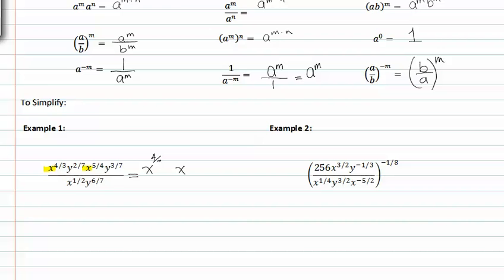The exponents are four-thirds and five-fourths. Before we can add the fractional exponents together, we must get a common denominator. The common denominator would be twelve, so we multiply the first one by four over four and the second one by three over three.